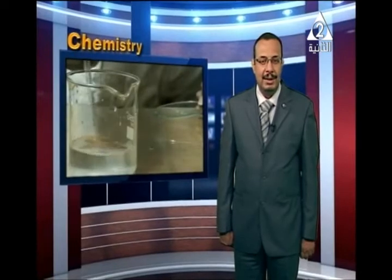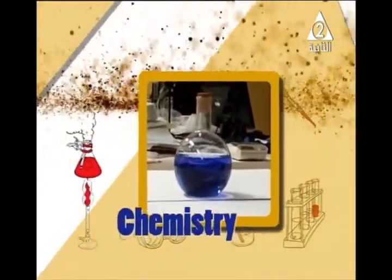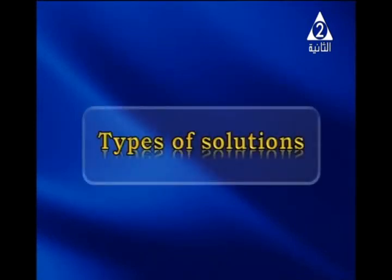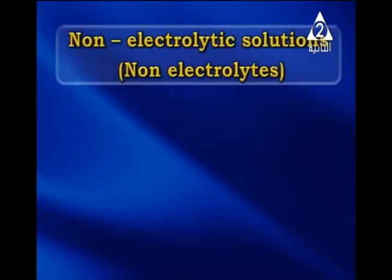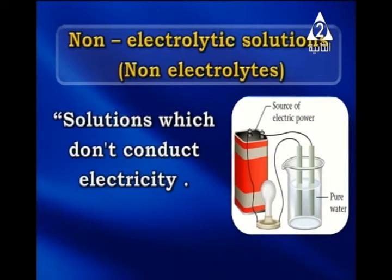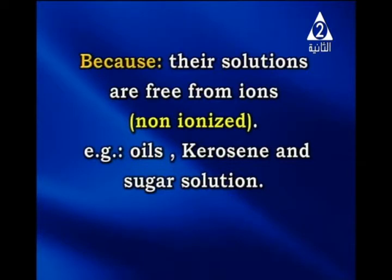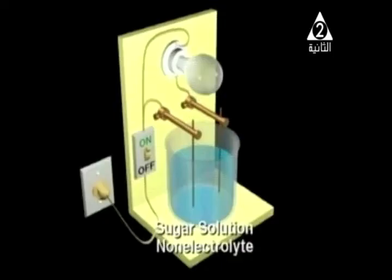Let us start ionic equilibrium. First, we have to know the types of solutions. Solutions can be divided by their ability to conduct electric current into two types. The first type is non-electrolytic solutions, or non-electrolytes, which are solutions that don't conduct electricity, because their solutions are free from ions — so they are non-ionized. Examples include oils, kerosene, and sugar solution.